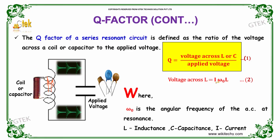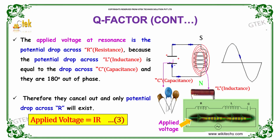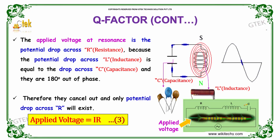The voltage across L is equal to I times omega-0 times L, where omega-0 is the angular frequency of the AC at resonance, L is the inductance, C is the capacitance, and I is the current. The applied voltage at resonance is the potential drop across resistance R, because the potential drops across the inductance and the capacitance are equal and 180 degrees out of phase. Therefore, they cancel out and only the potential drop across R remains.